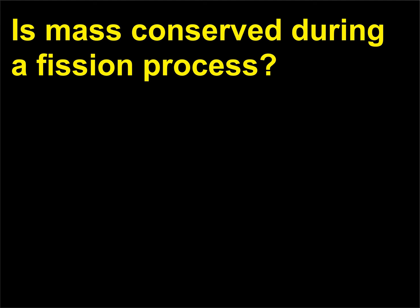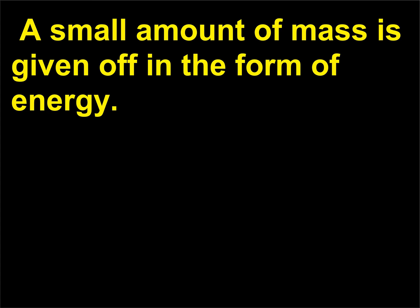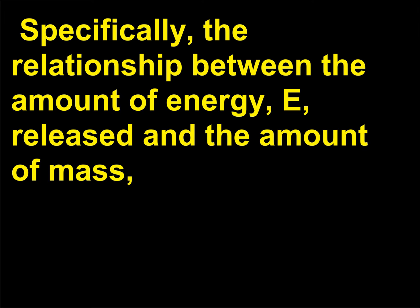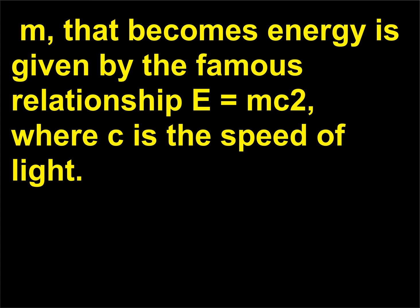Is mass conserved during a fission process? Almost, but not quite. A small amount of mass is given off in the form of energy. Specifically, the relationship between the amount of energy released and the amount of mass m that becomes energy is given by the famous relationship E = mc², where c is the speed of light.